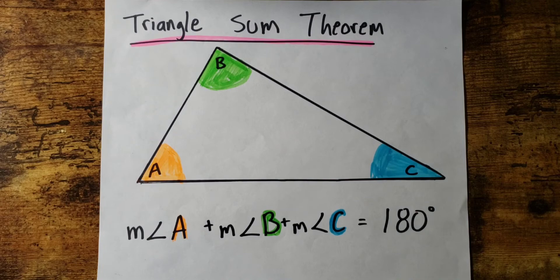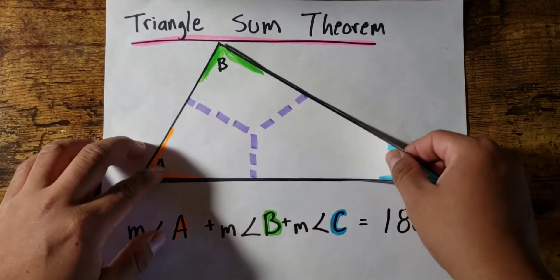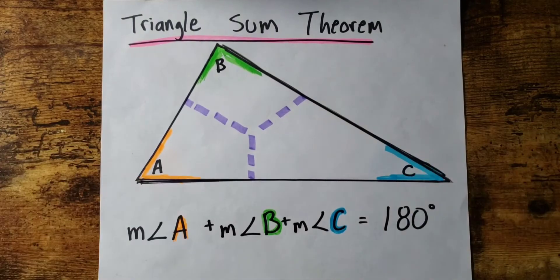This is a pretty interesting visual representation of this theorem. Let's say I cut this triangle along the purple lines. If I cut along the purple lines, I get the following triangle.